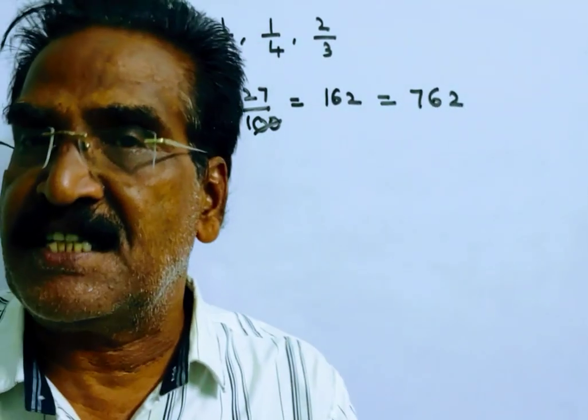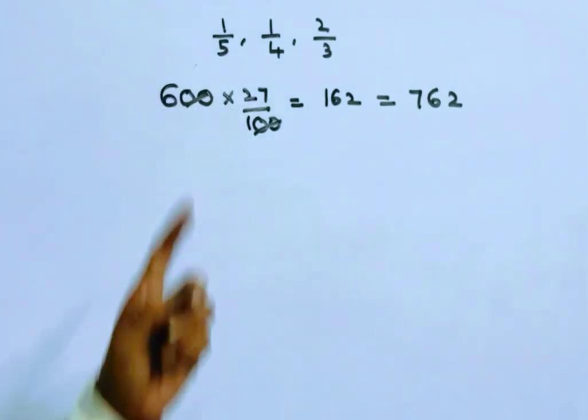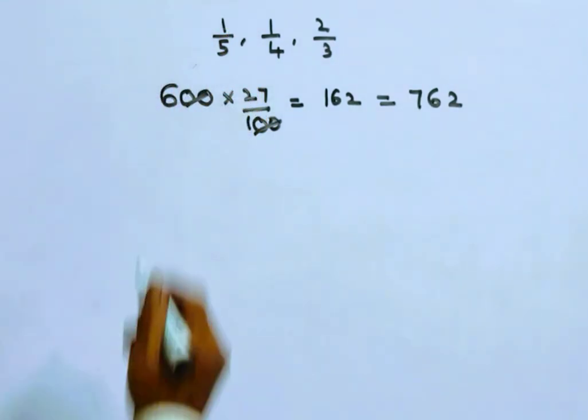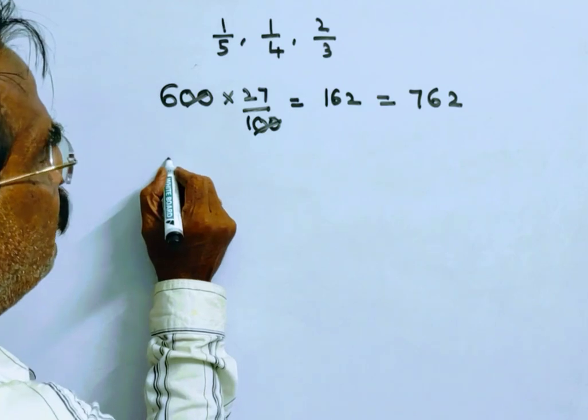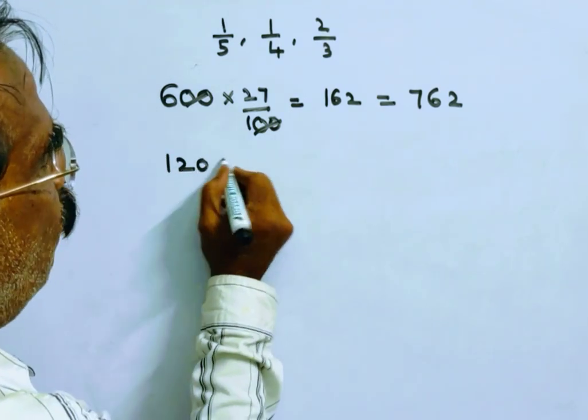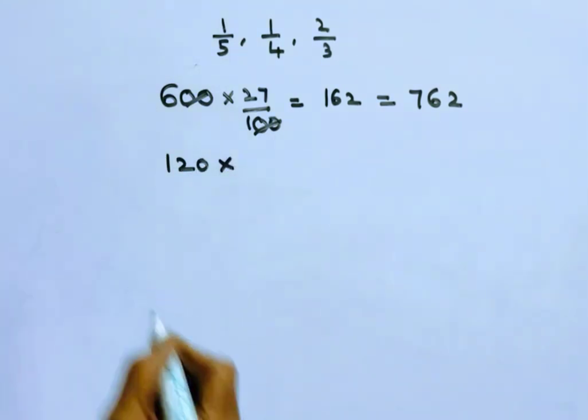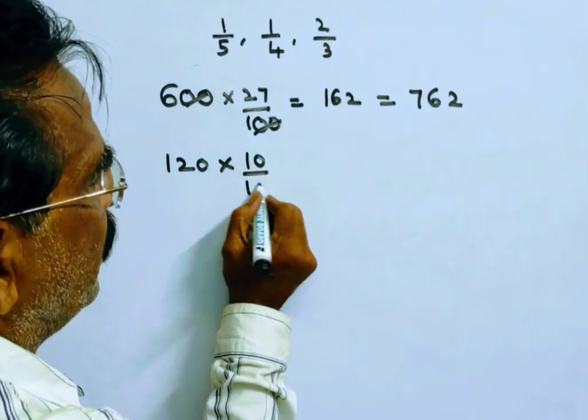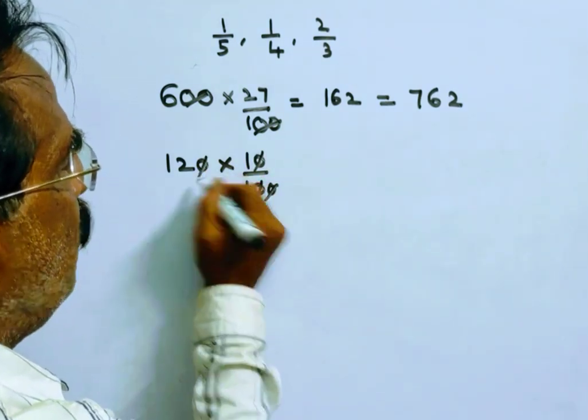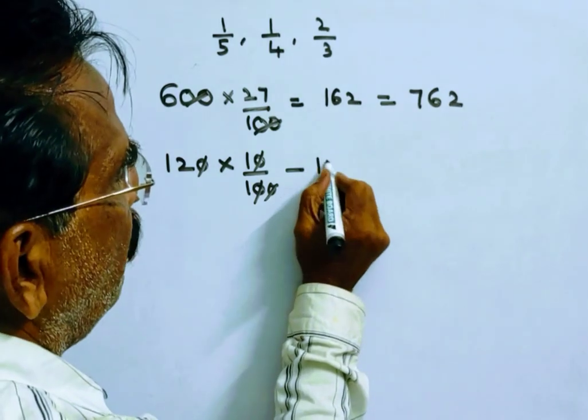Of which, 1/5th of the item is 1/5th of 600, which means 120. He sold it at a loss of 10%, so minus 12. So 120 minus 12 equals 108.